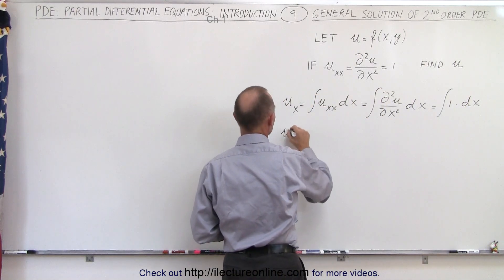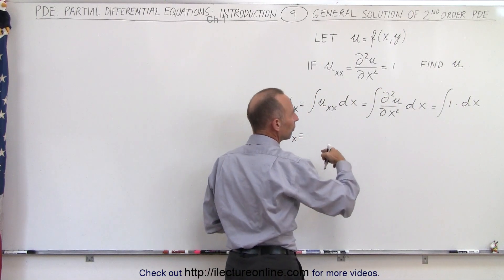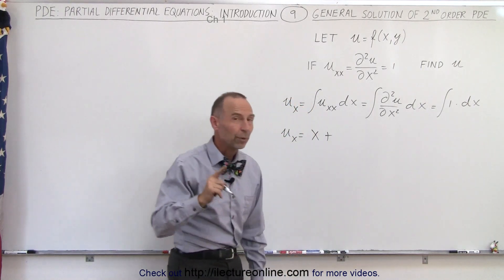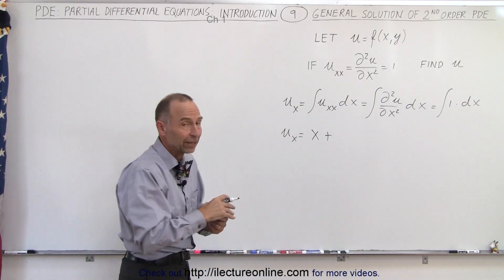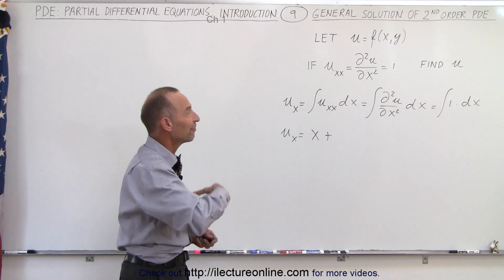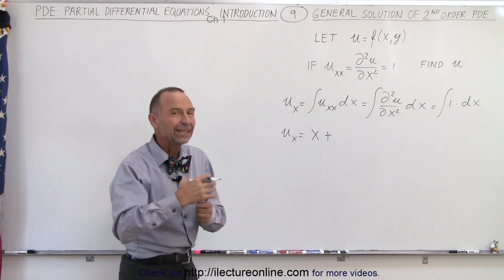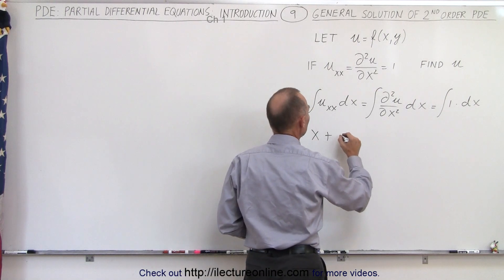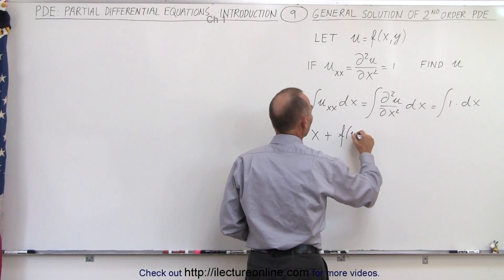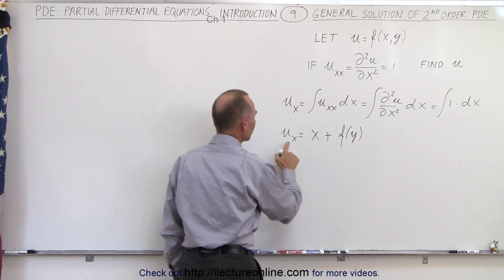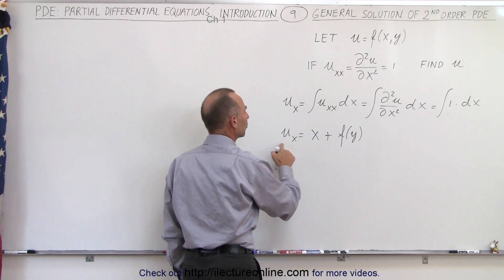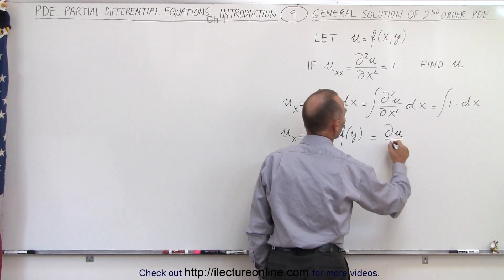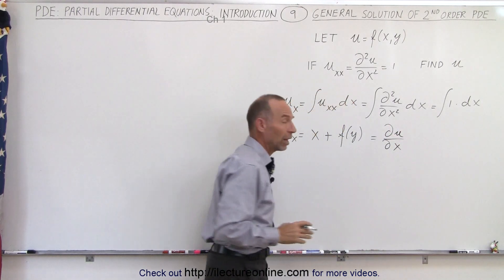When we take that integral, the integral of 1 is equal to x. But remember, with partial differential equations we don't get a constant of integration — we get a function of integration of the independent variable that's kept constant, which in this case is y. So we include plus a function of y, giving us the first partial derivative of u with respect to x.